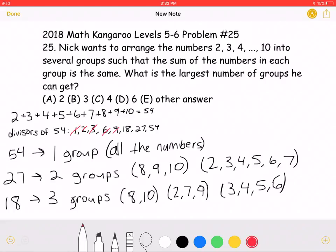If the sum of the numbers in each group is 54, then we would have one group which has all the numbers.